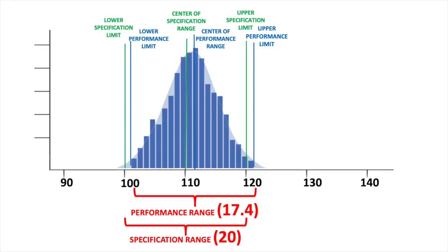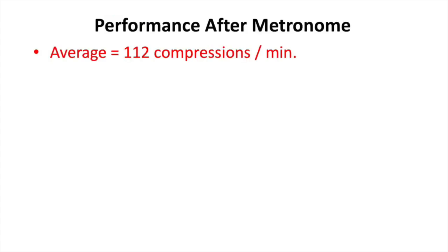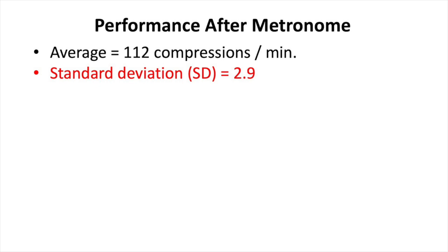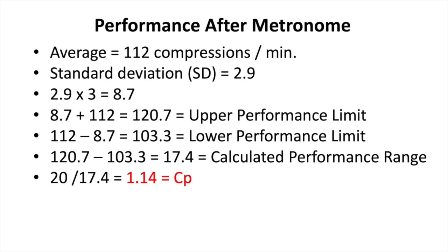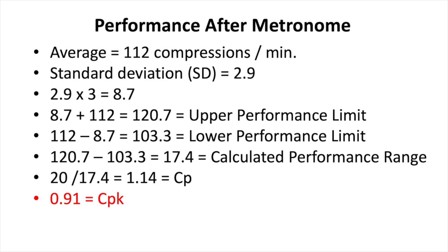After a while, they pulled another 100 cases — all from after the point where the metronome was added. The new performance average for the compression rate was 112, much closer to the target of 110 than the previous average of 128. The standard deviation got better too — now only 2.9, down from 9 originally and then 5.1. The new upper performance limit was 120.7 and the lower was 103.3, giving a calculated performance range of 17.4 — finally less than the specification standard of 20. As expected, CP was finally greater than 1 at 1.14. But calculating CPK, it's only 0.91 — we still need to get it above 1.